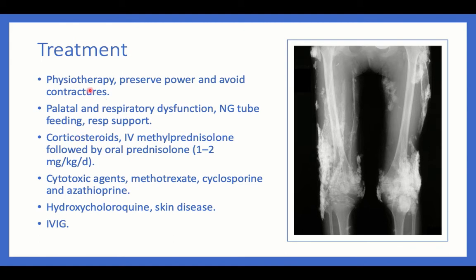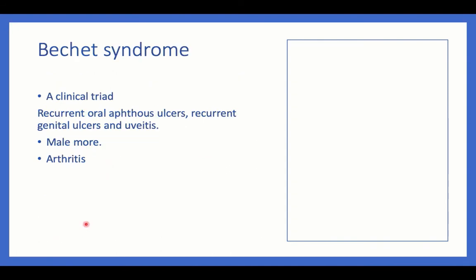Treatment general measures include physiotherapy to preserve muscle power and avoid contractures. Nasogastric tube feeding is very important for palatal dysfunction, and respiratory support for respiratory dysfunction. In severe disease, an IV course of methylprednisolone for about three days is given, followed by oral prednisolone at 1–2 mg/kg/day, guided by clinical improvement, then gradual tapering. Cytotoxic agents such as methotrexate and cyclosporine may be added. Hydroxychloroquine is used for skin disease, and IV immunoglobulin may be required.